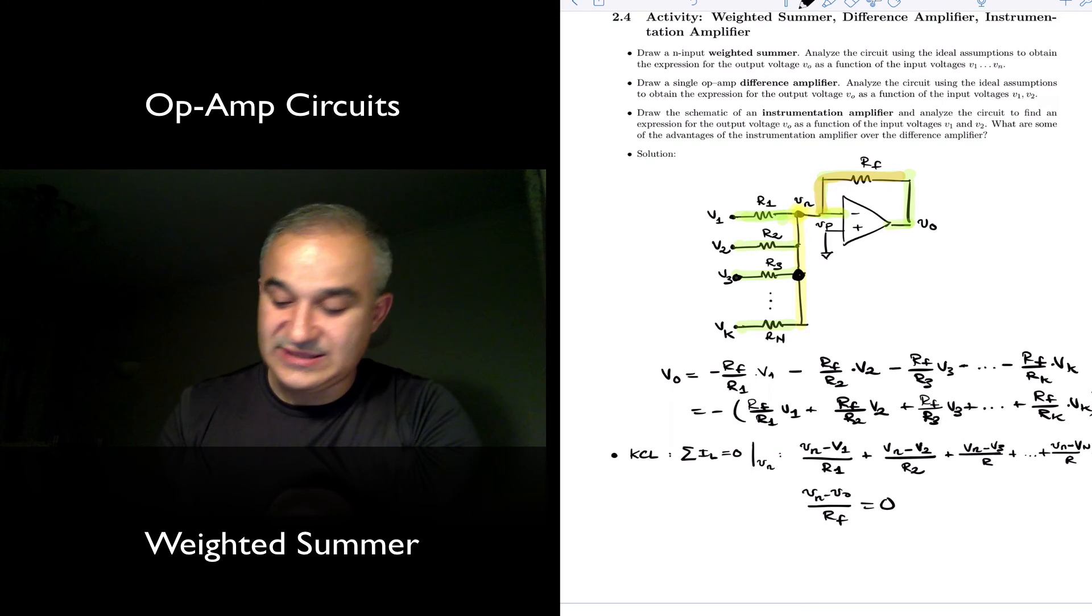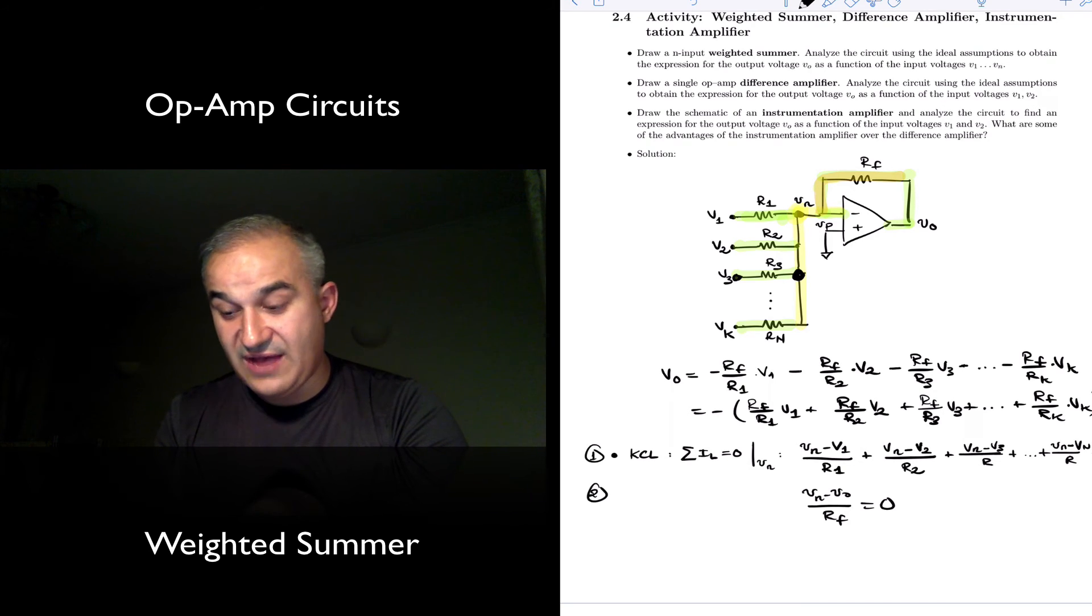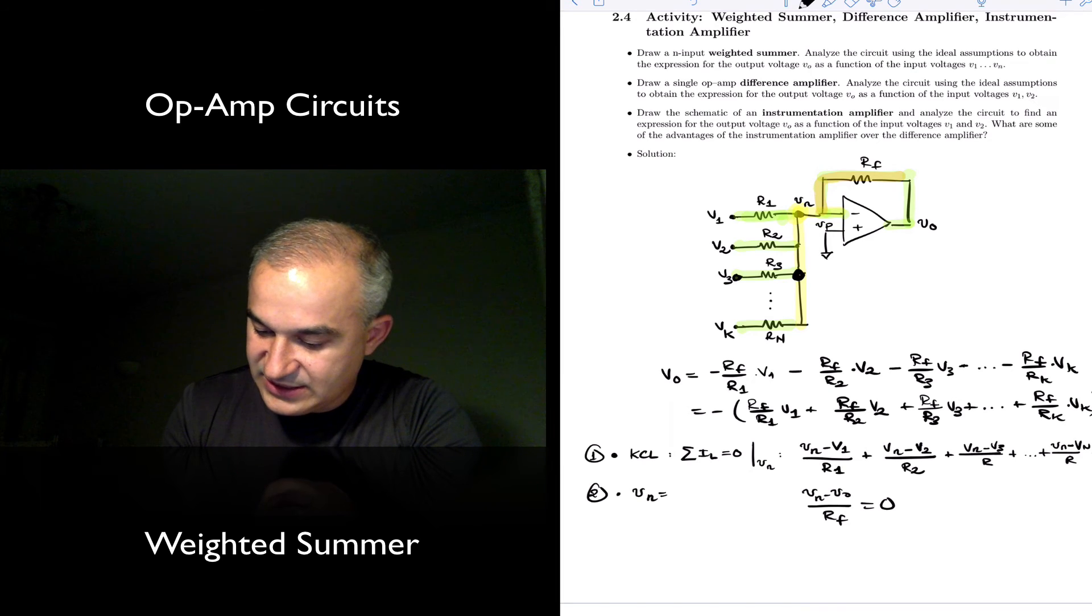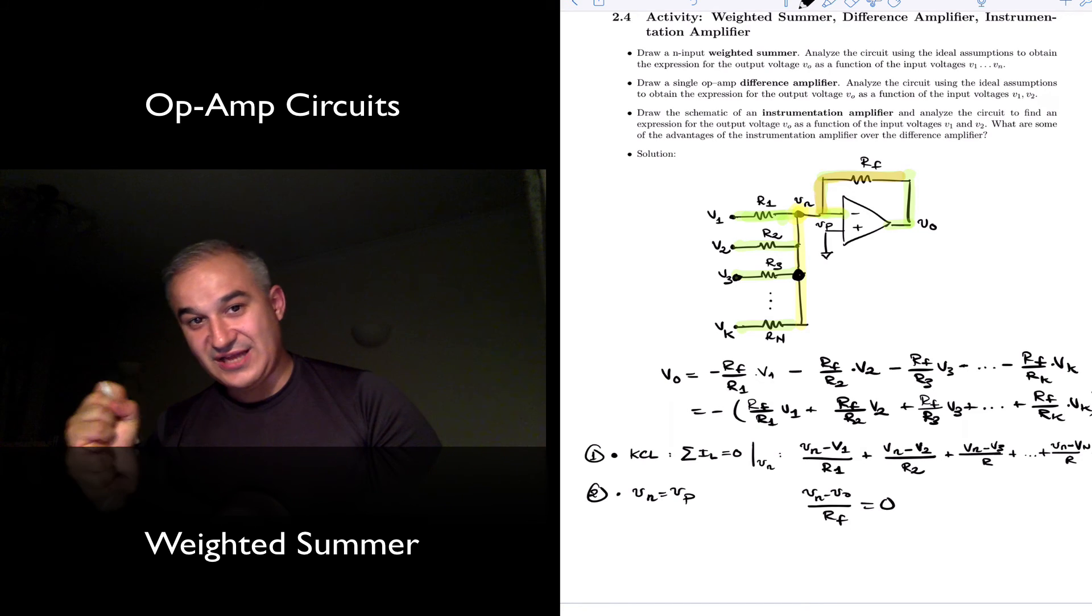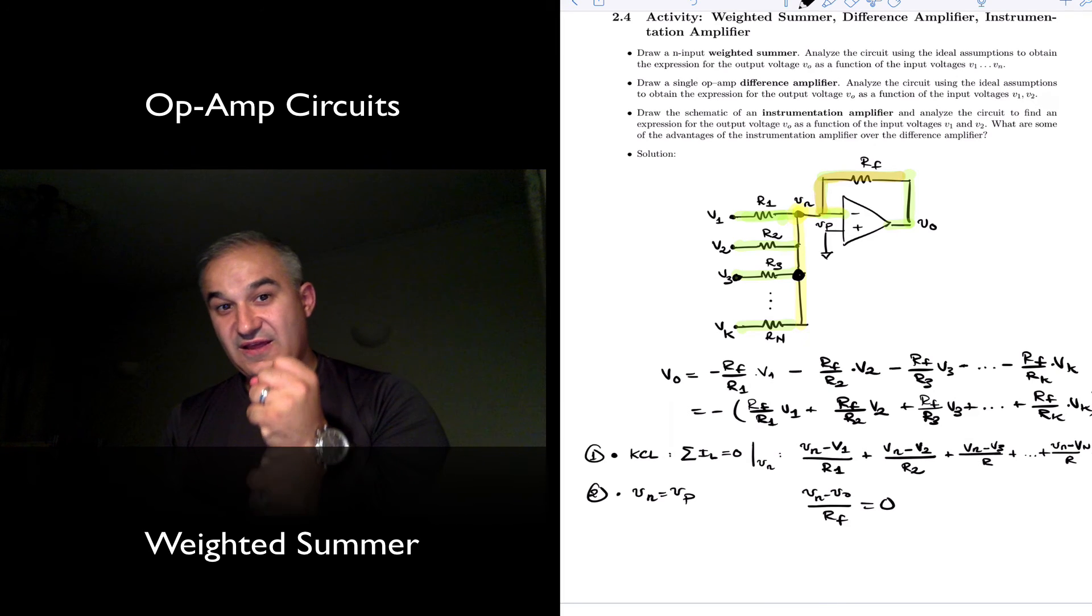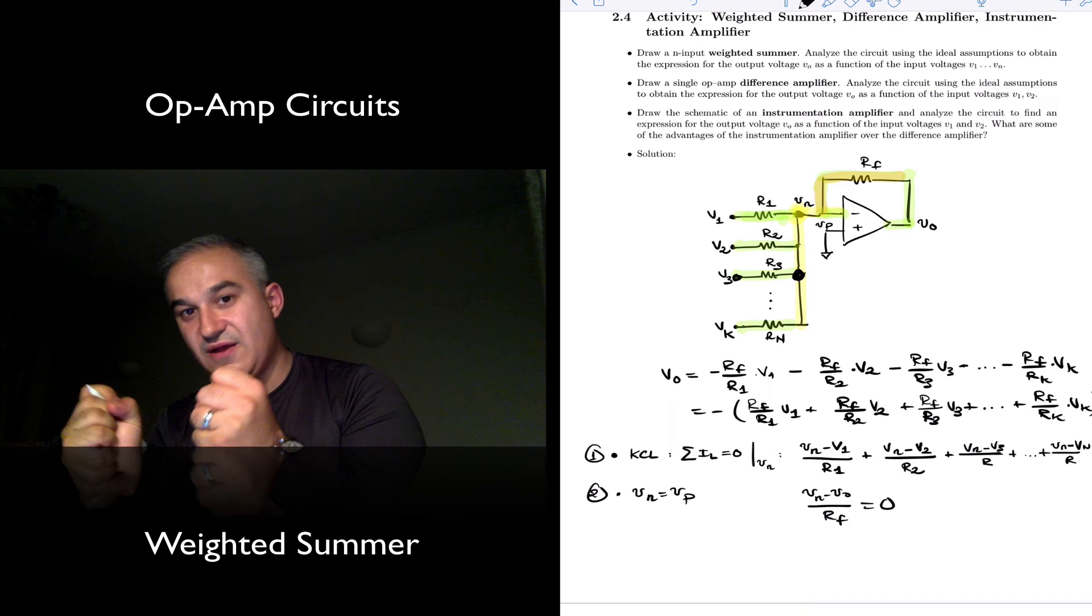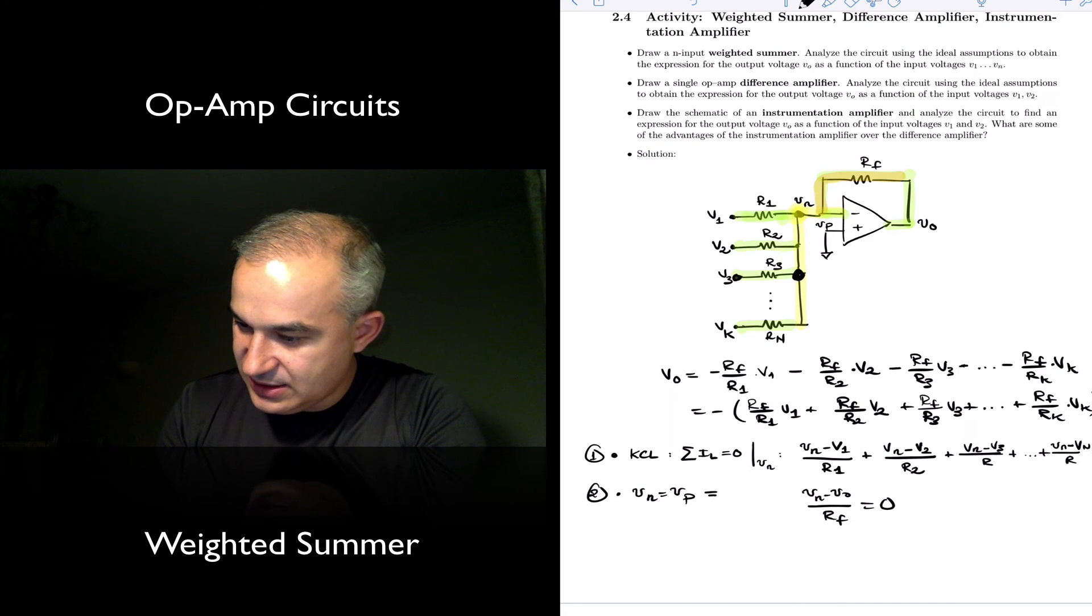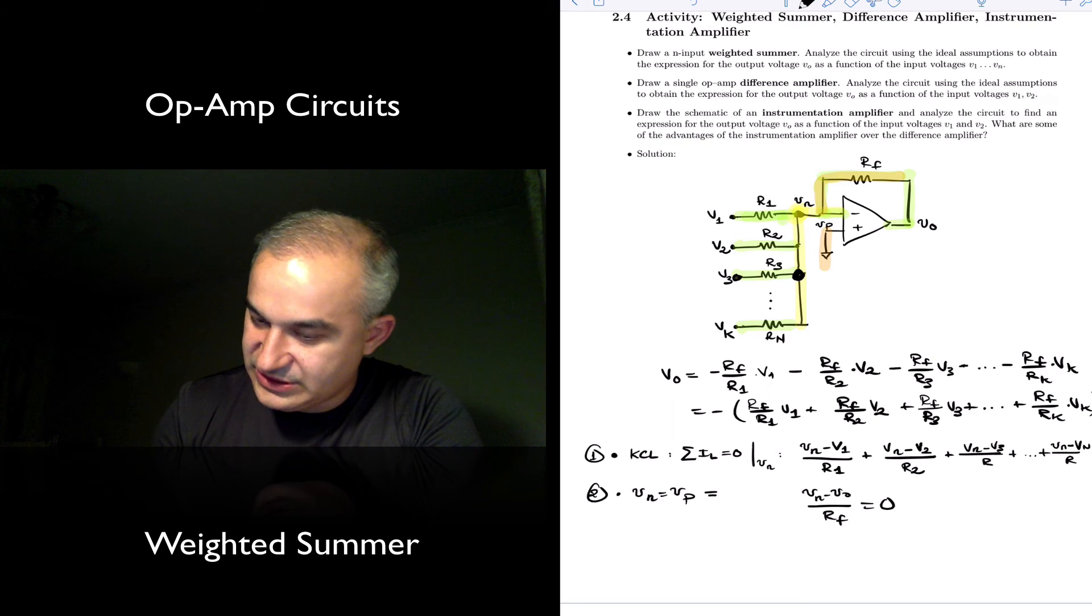Okay so that's step one. Our second step was that if we have negative feedback we have Vn is equal to Vp, meaning the operational amplifier adjusts the output voltage as to make the voltages in the inverting input terminal and the non-inverting terminal very close together. And so in this case the non-inverting, notice it is connected to ground and so this is equal to zero.